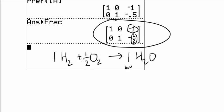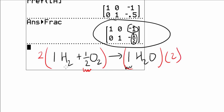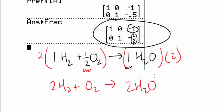The problem is we have a fraction, which we don't want. To get rid of it, multiply by 2 — but whenever you multiply one term by 2, you must multiply the entire equation by 2. So the balanced equation becomes 2H2 plus O2 produces 2H2O. That's the answer.